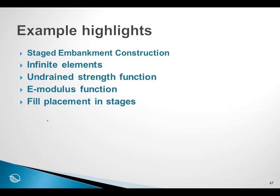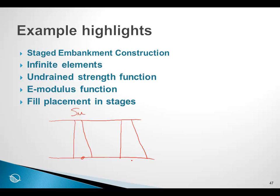In most soft soil sediments, the undrained strength tends to increase with depth. The reason for that is that at greater depths there's a higher overburden stress — the soil is consolidated to a higher stress level, and consequently has a higher undrained strength at depth than near the ground surface. The same is true for the stiffness of the soil. At the bottom of the layer under higher stress levels, the soil tends to be stiffer because it is consolidated to a higher stress level, and so the total Young's modulus generally tends to increase with depth. In this example we'll show how these functions can be defined in Sigma W.